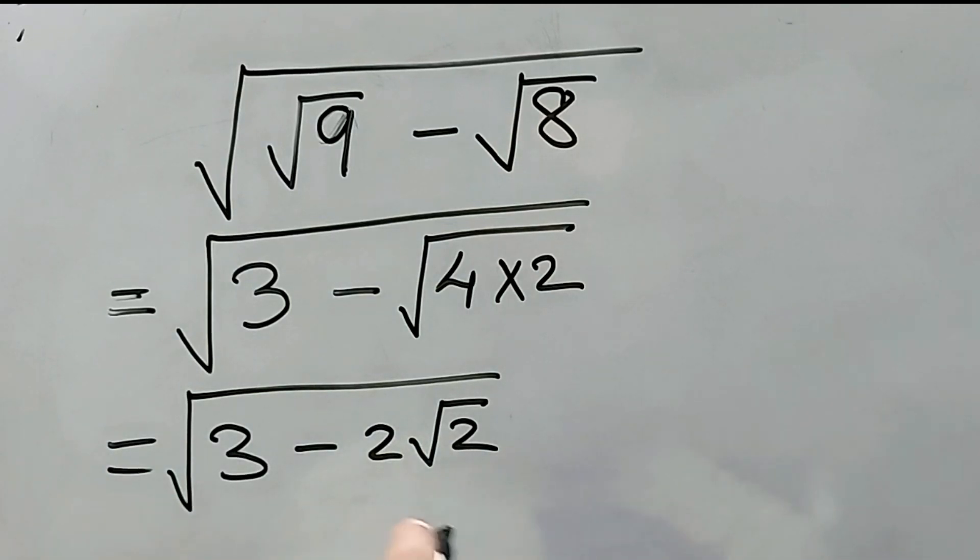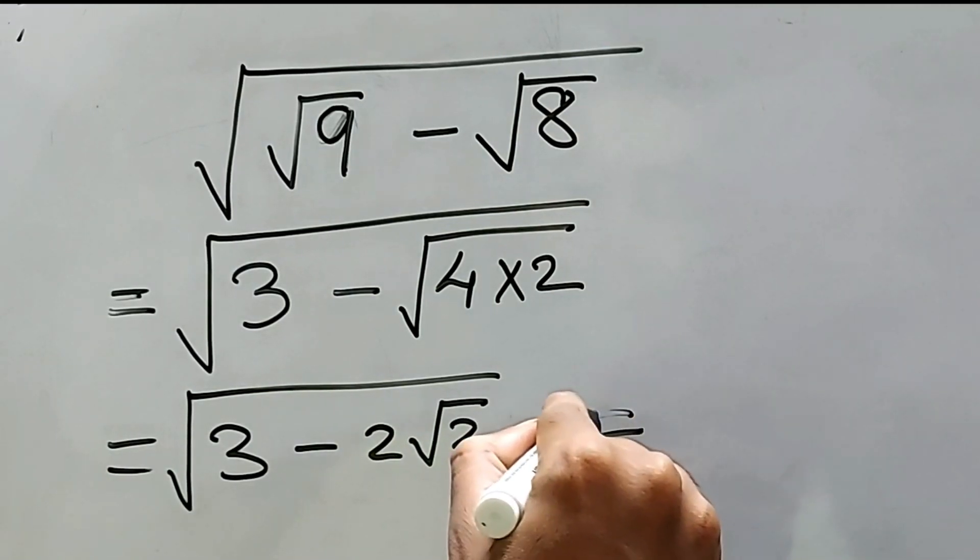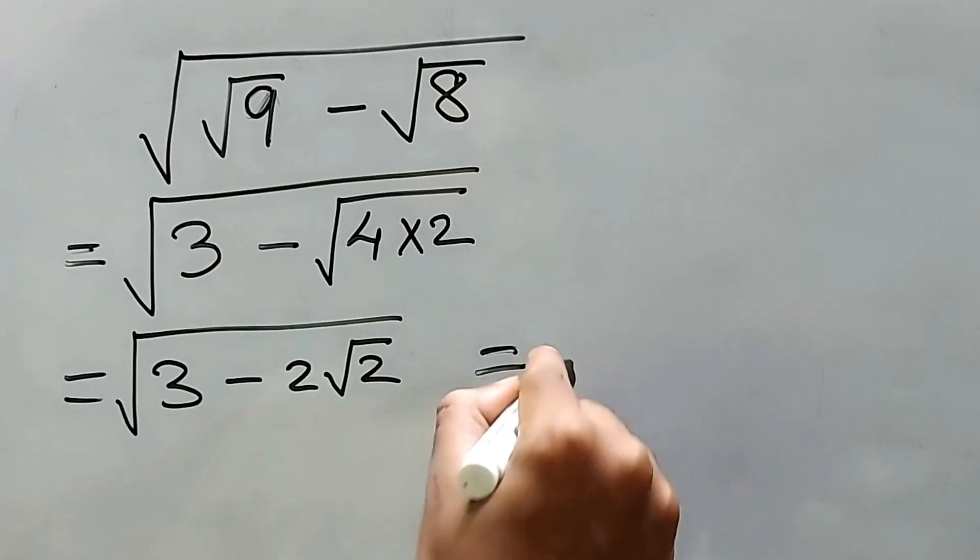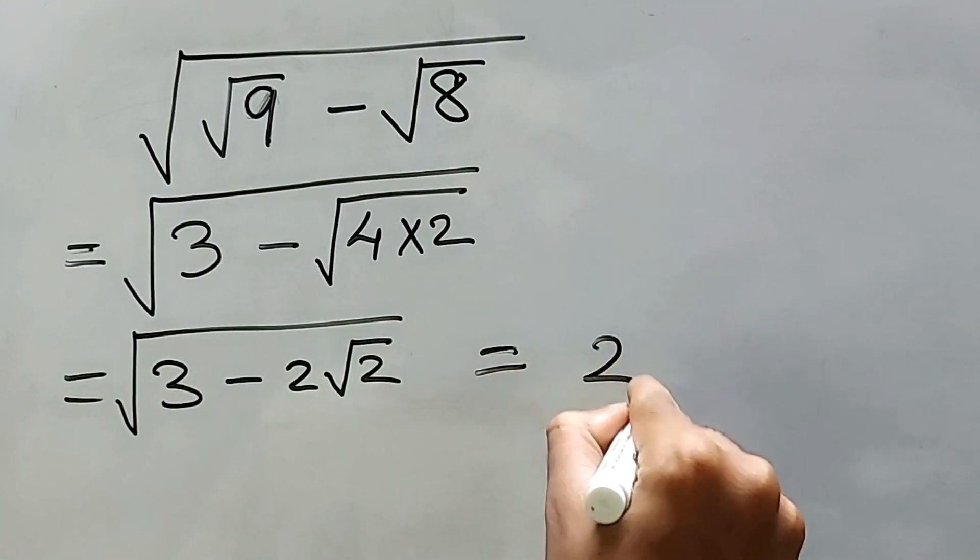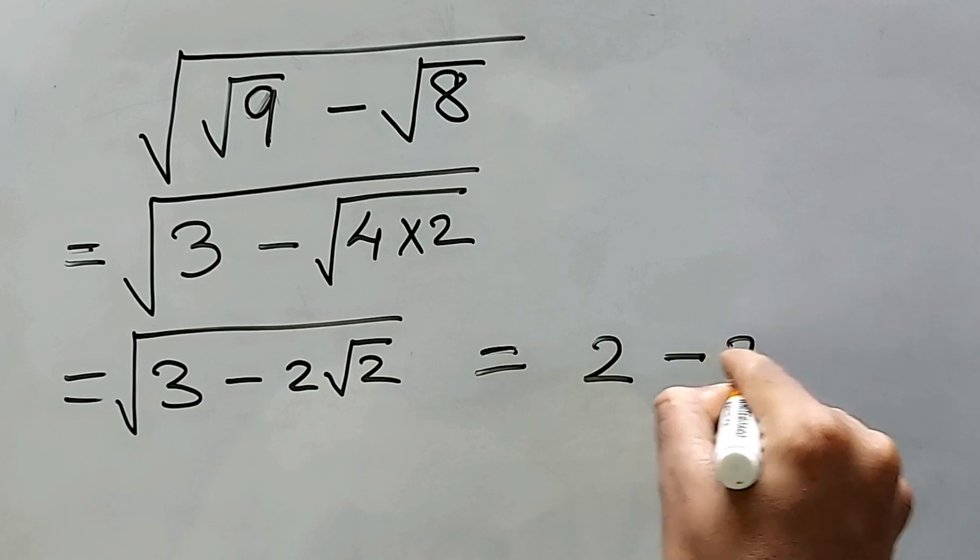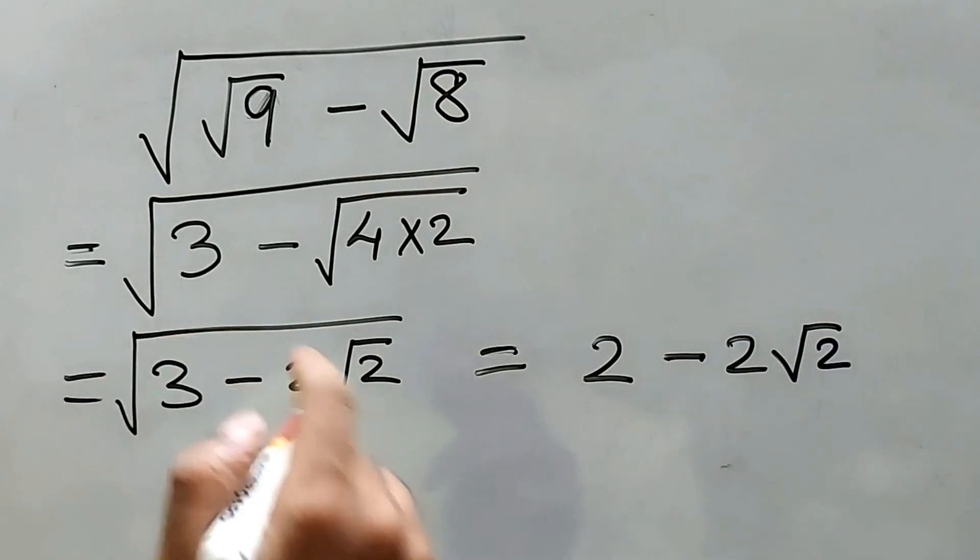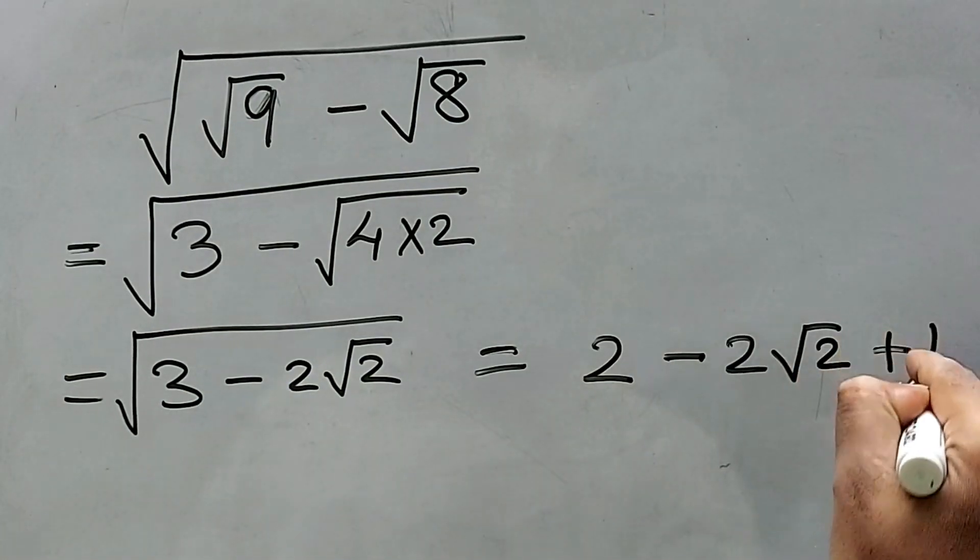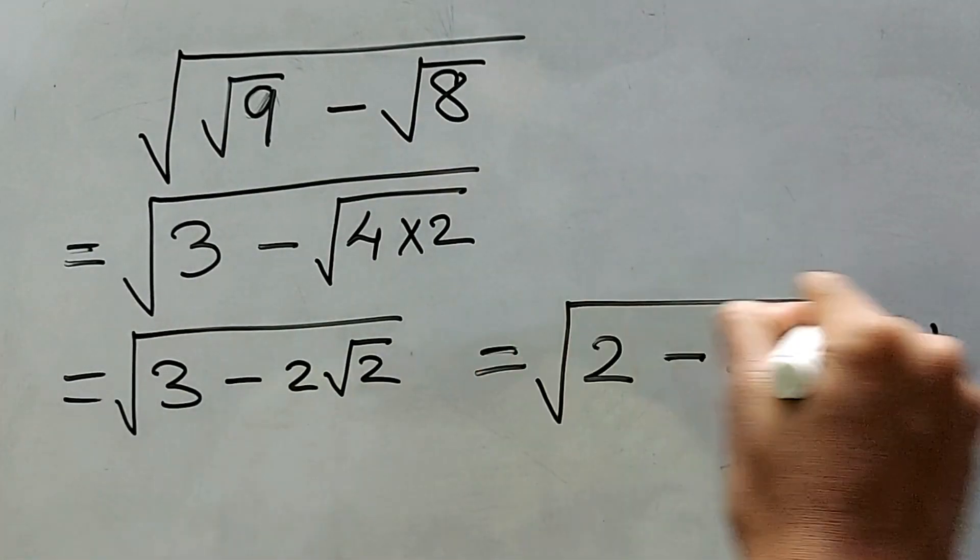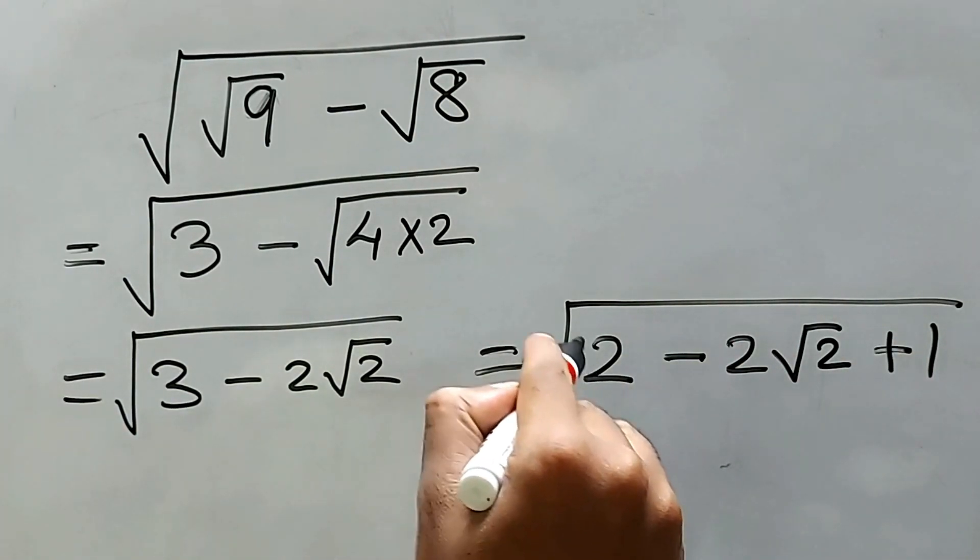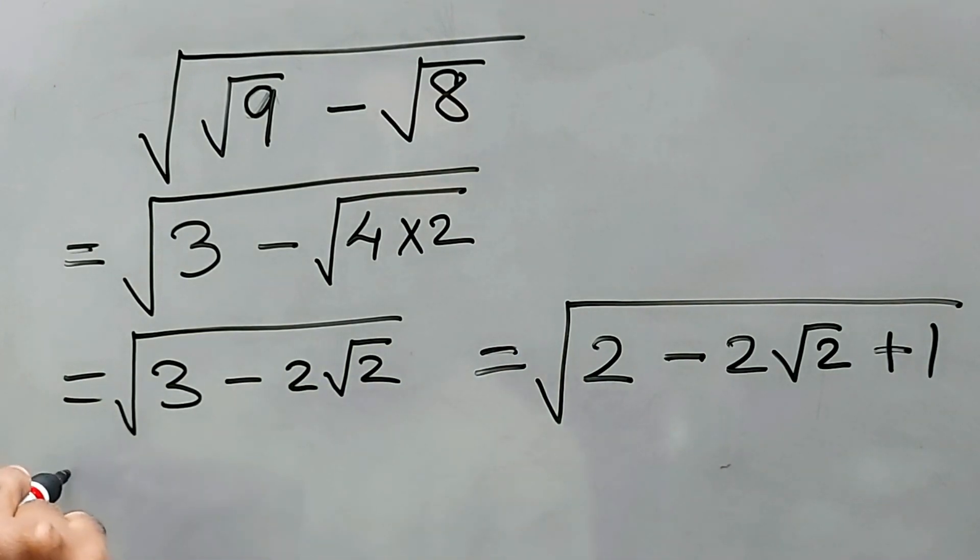Let's try this out. We can distribute this 3 into 2. 2 square root of 2 will be the same and plus 1. This is fine, right? 2 plus 1 is 3. We know this. Now, this is the thing, my friend.